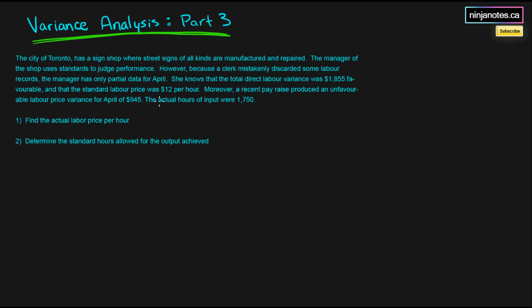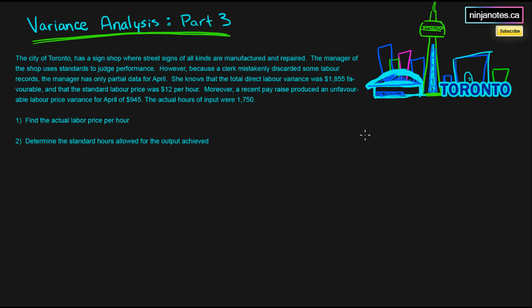The question has to do with a sign shop within Toronto. The city of Toronto has a sign shop where street signs of all kinds are manufactured and repaired. The manager uses standards to judge performance. However, because a clerk mistakenly discarded some labor records, the manager has only partial data for April. She knows that the total direct labor variance was $18.55 favorable and that the standard labor price was $12 per hour. A recent pay raise produced an unfavorable labor price variance for April of $9.45.